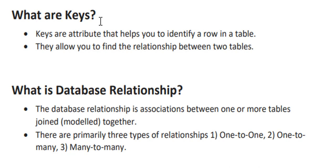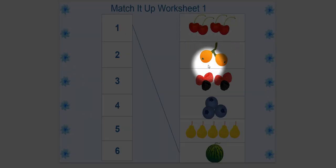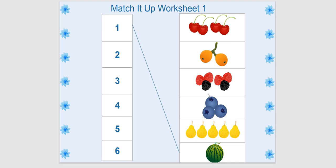Let's look at one example first. As you can see on my screen — I'm sure you've probably seen this before, back in nursery school or kindergarten — we have something where we have to match up what we have in two separate tables. Here we have the numbers one through six, and then we have fruits with different colours and different counts. This is one connecting to one because we have one fruit.